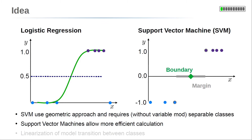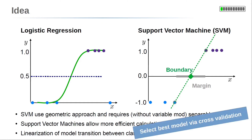A major advantage of a support vector machine is that it allows for efficient calculation because of its simple approach. It should be mentioned that by using some kind of linearization, the logistic regression model can be transformed into the support vector machine model. However, if you just want to decide which model is best for your specific problem, consider both, fit them to data, and decide using cross-validation.